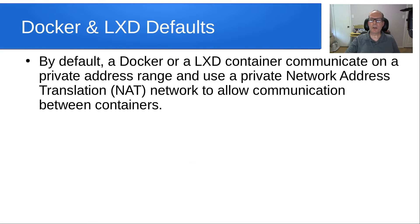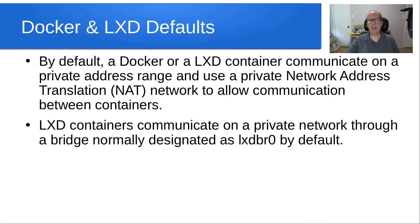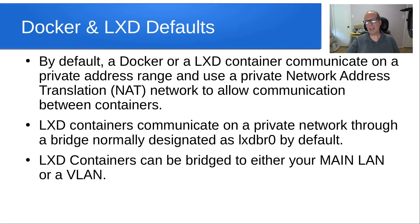By default, a Docker or LXD container communicates on a private address range and uses a private network address translation, or NAT network, to allow communication between containers. LXD containers communicate on this private network through a bridge normally designated as lxdbr0 by default. LXD containers can also be bridged to either your main LAN or to a VLAN.